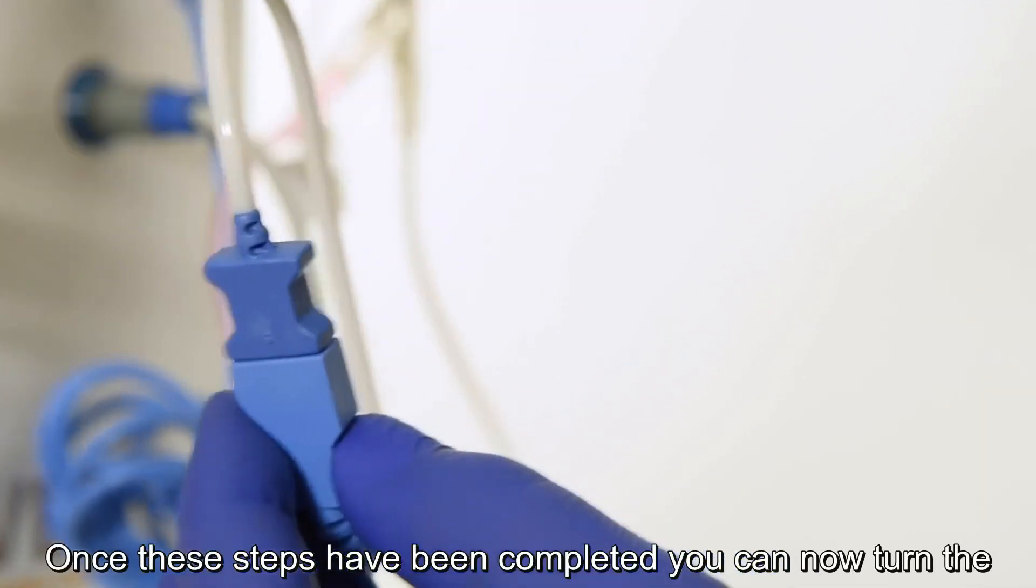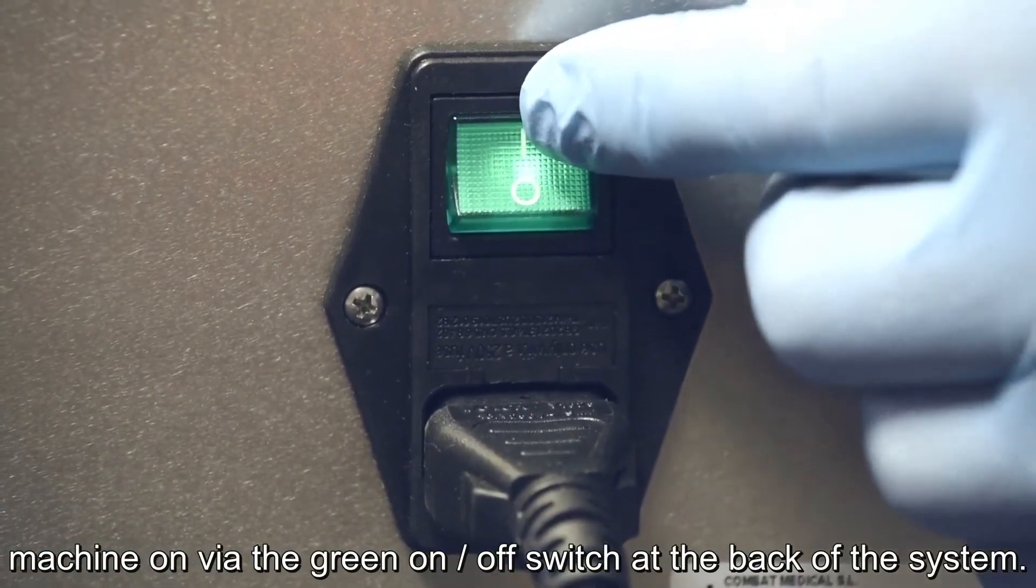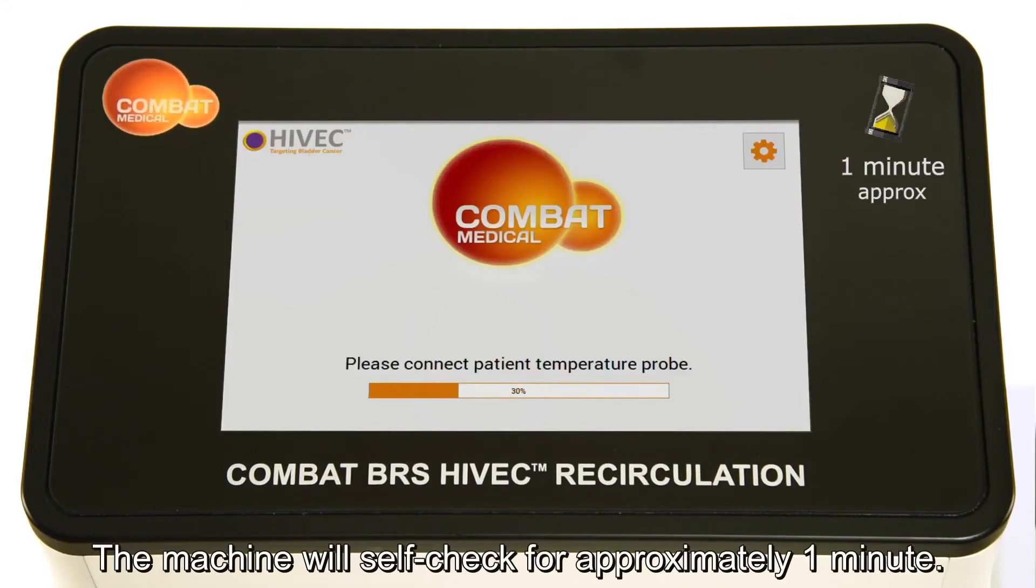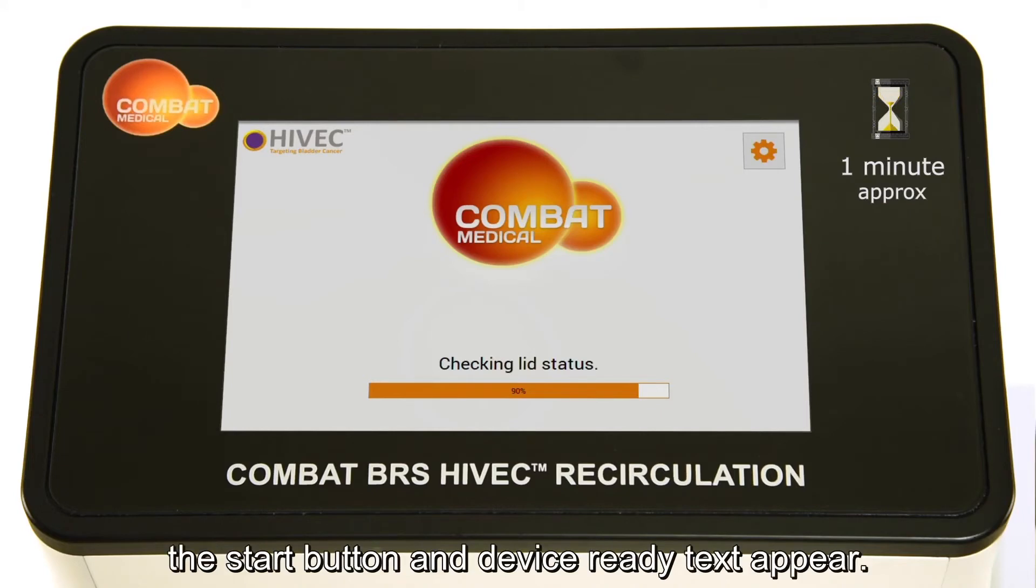Once these steps have been completed, you can now turn the machine on via the green on-off switch at the back of the system. The machine will self-check for approximately one minute. Only once this is successfully complete will the start button and device ready text appear.